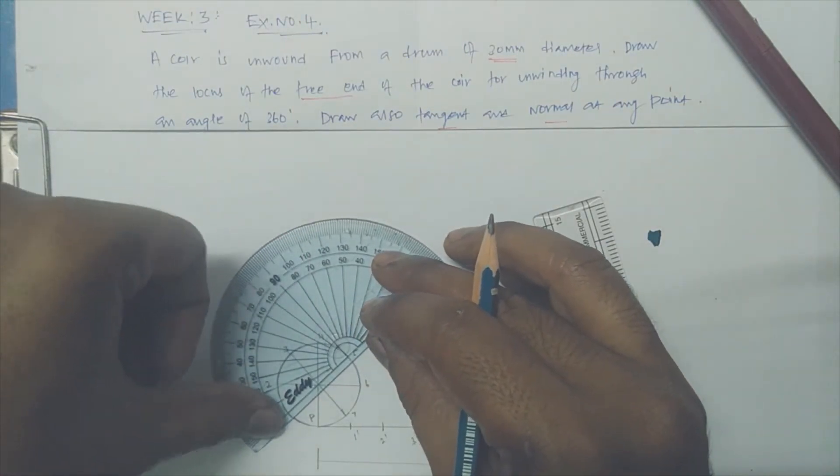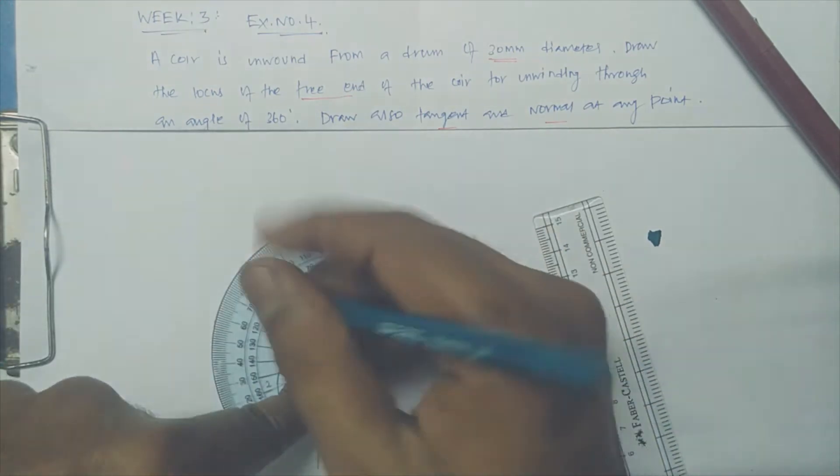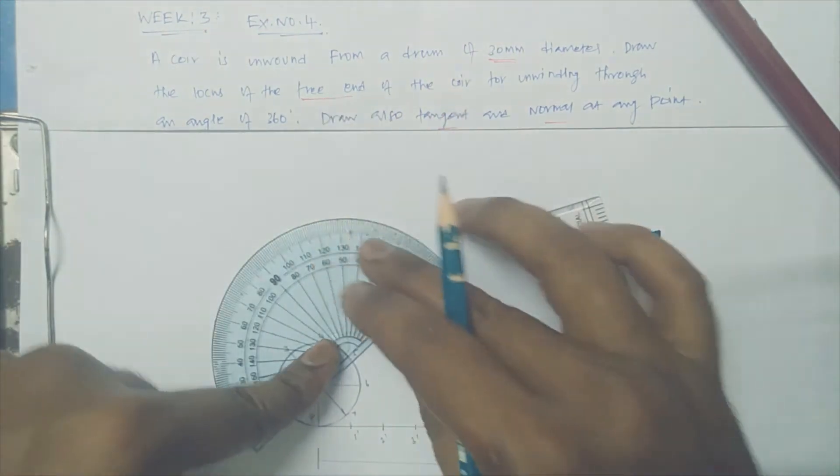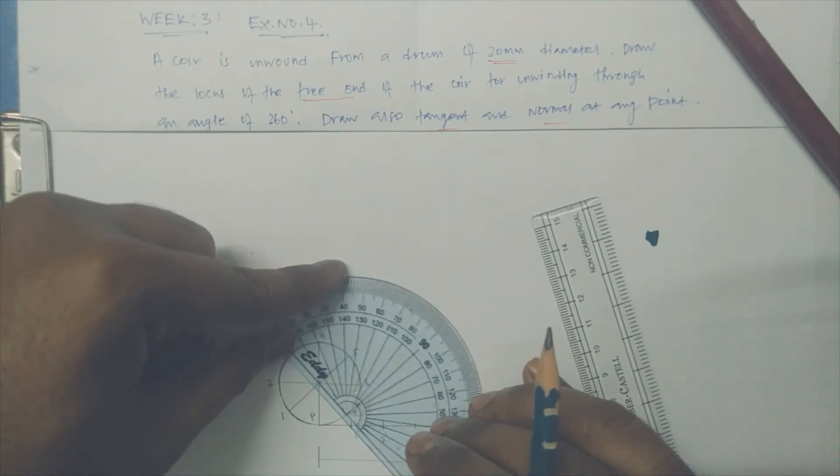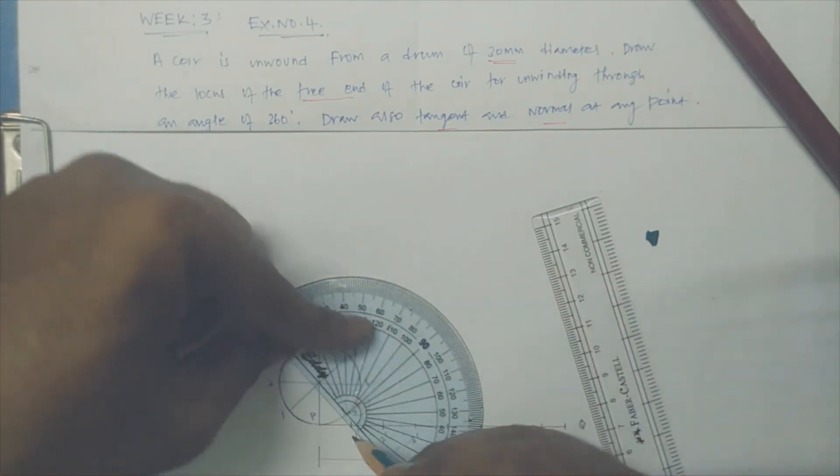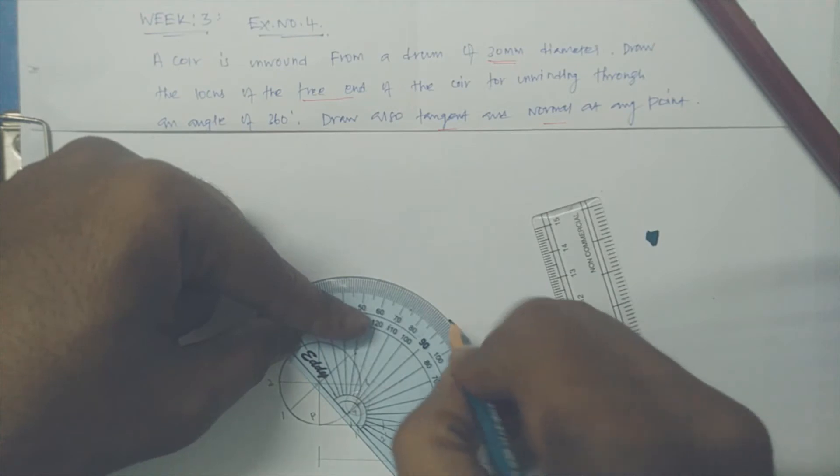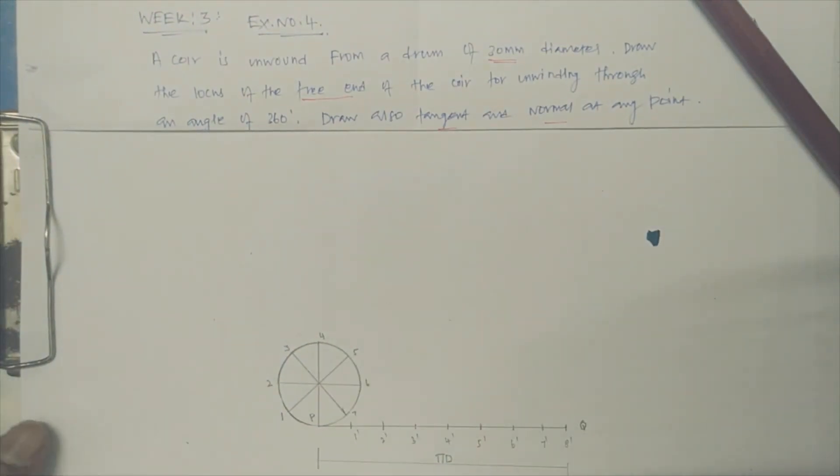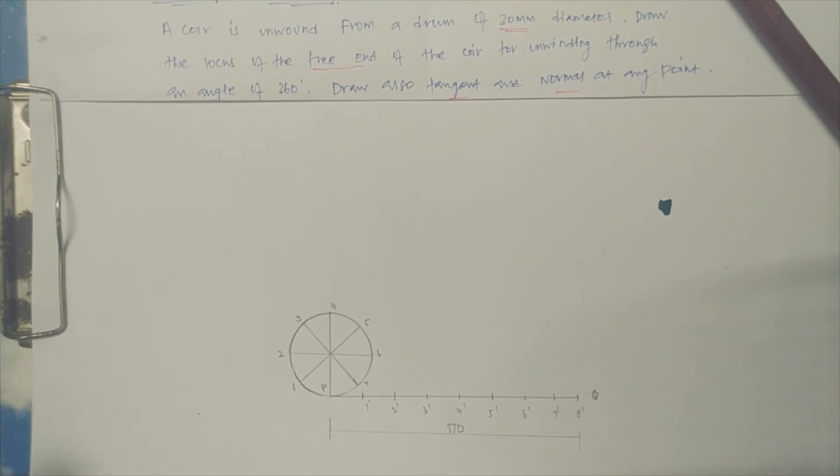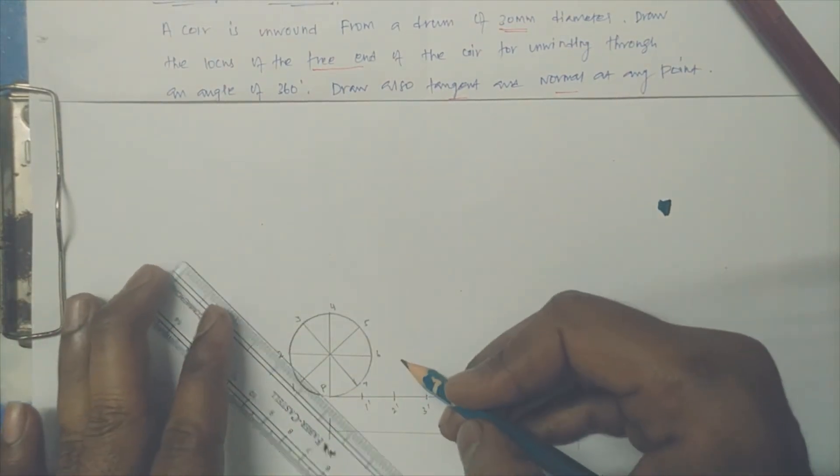I am marking the normal line that is 90 degrees. Similarly 4 is not required, anyway it is horizontal line. I am fixing at 5, I am marking the 90 degrees. Similarly 6 is not required. 7, I am marking 90. So wherever I just mark the 90, let's connect by a line.